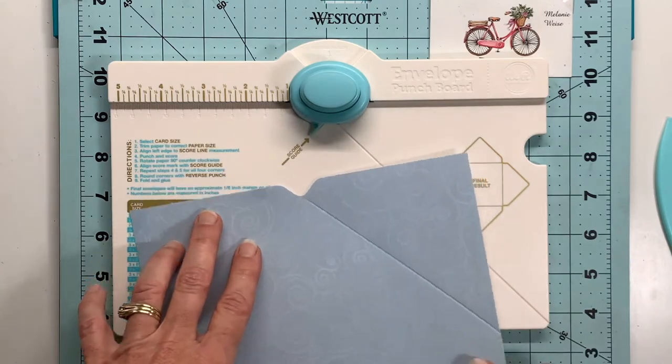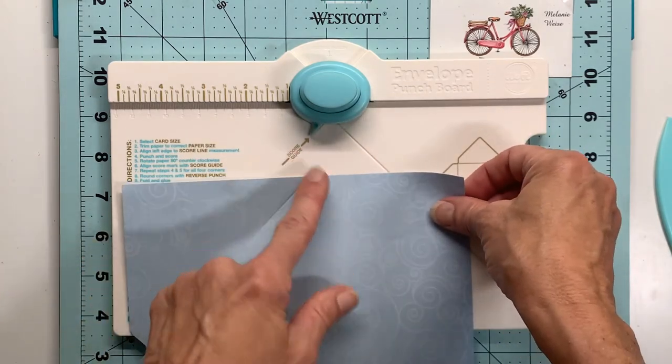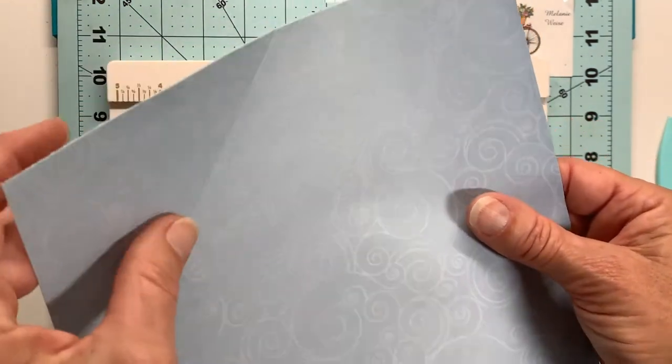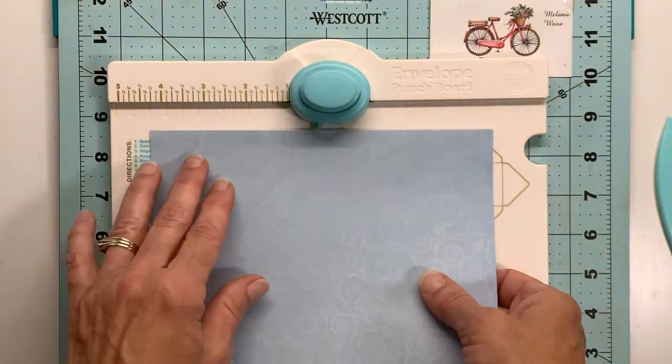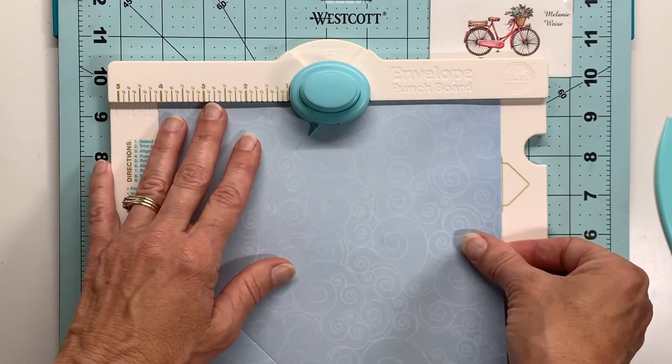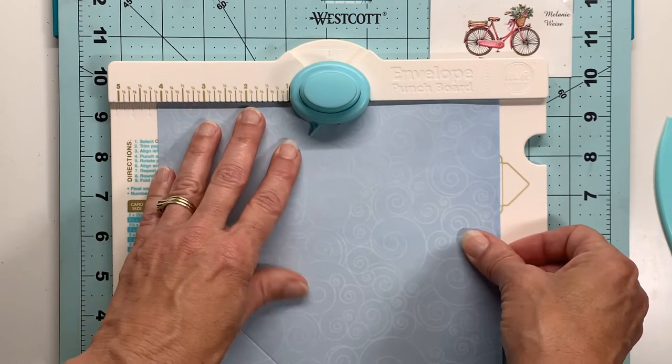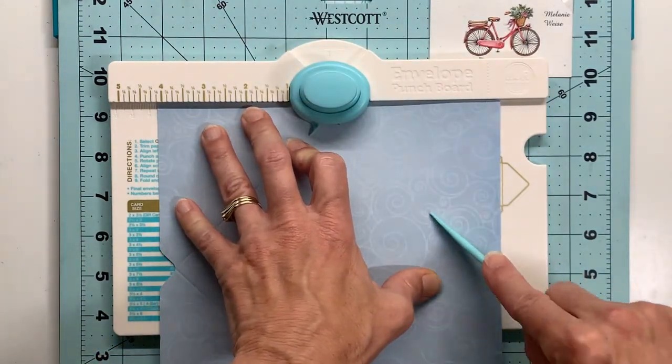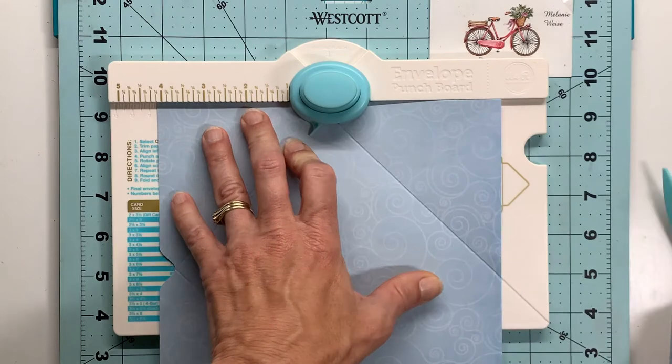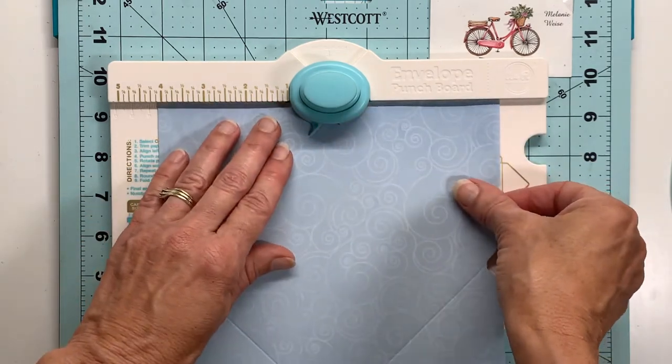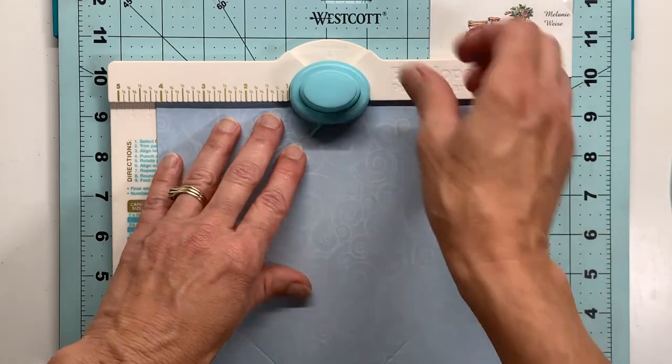So you're going to do this four times and you can see the score lines are very easy to see and getting that lined up with the point on the punch. Just really taking your time to make sure you're doing as precise as you possibly can and turning 90 degrees until you've got all of your sides punched and scored.